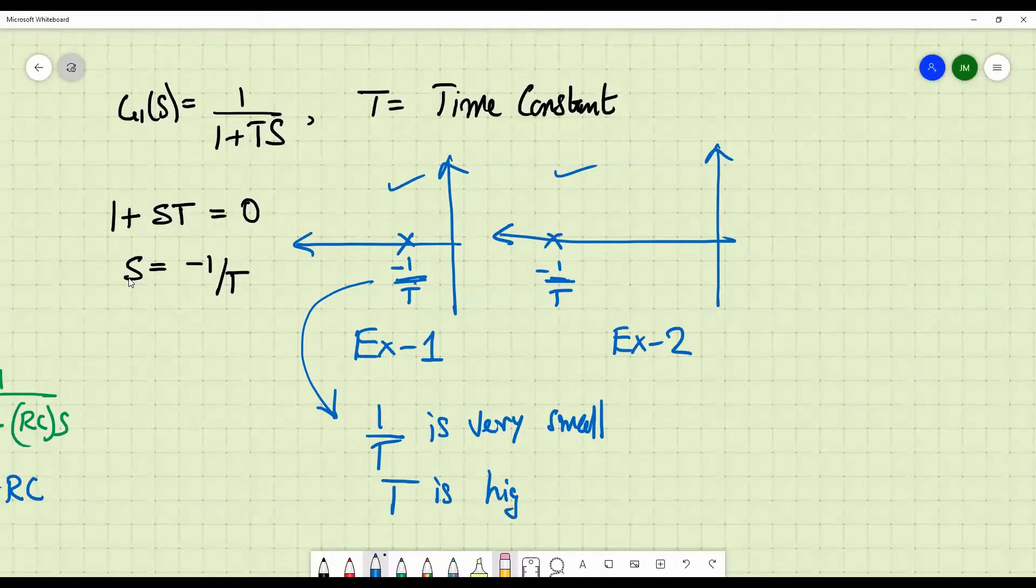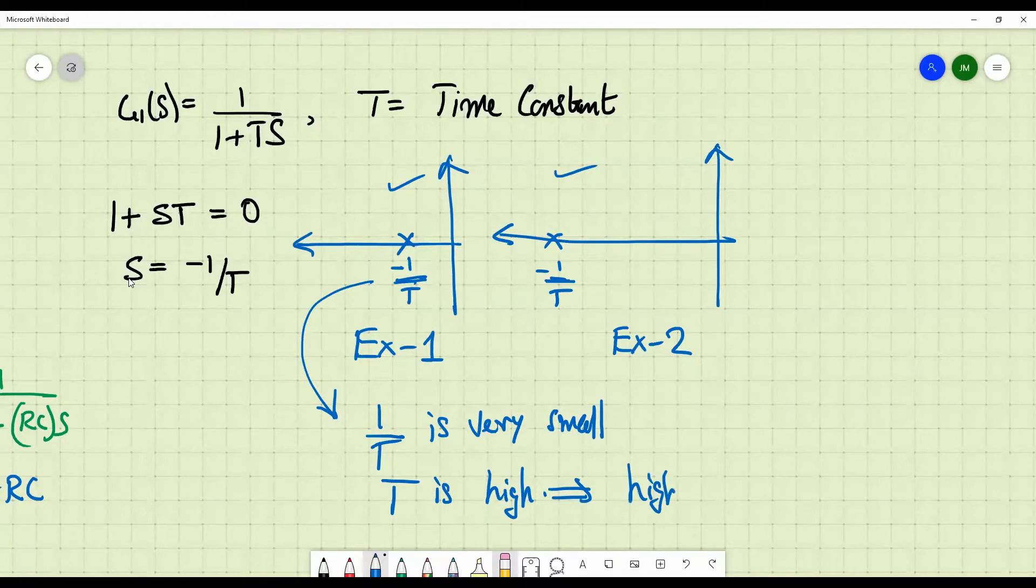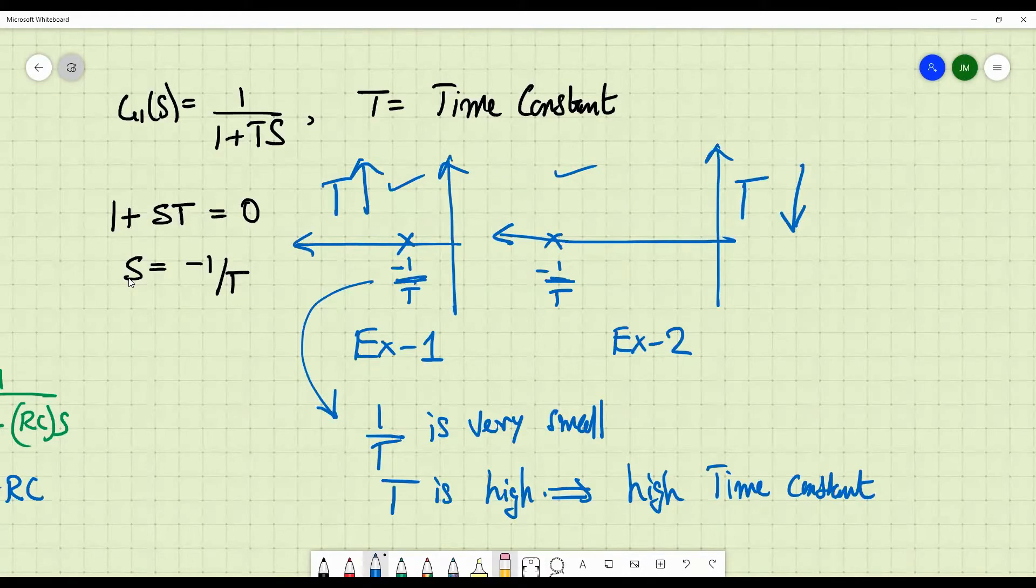Which means this has a high time constant. So here basically T is high and in this example T is low. So, as you move the first order pole away and away from the j omega axis, what you are doing is, you are basically decreasing the time constant of the system.